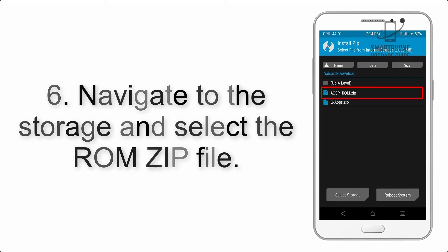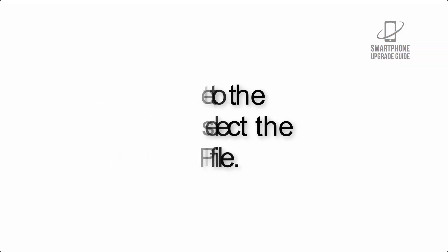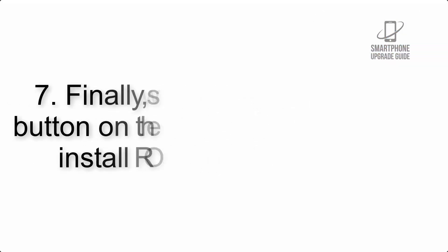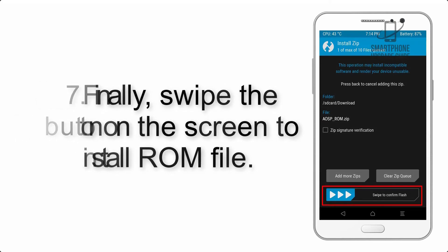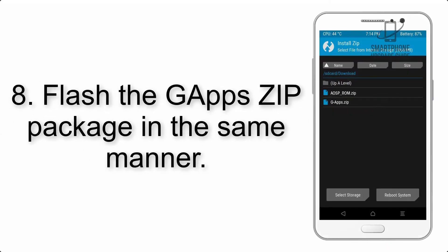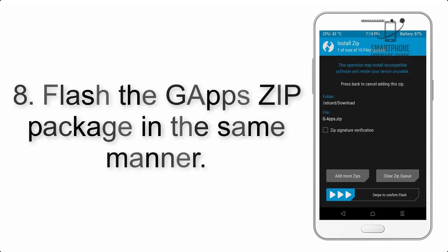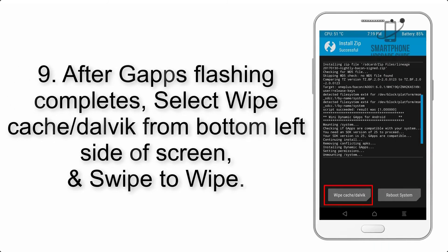Step 5: Go back to the recovery main screen and tap on the Install button. Step 6: Navigate to the storage and select the ROM zip file. Step 7: Finally, swipe the button on the screen to install the ROM file.